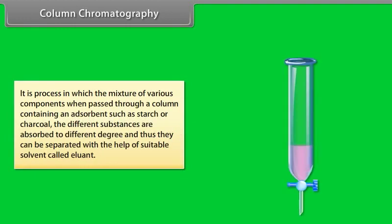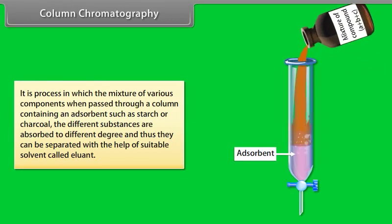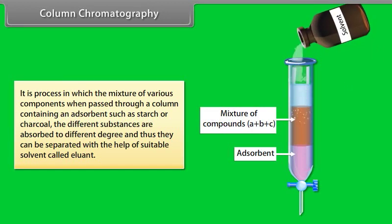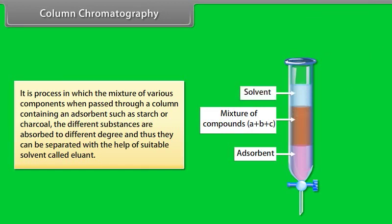Column chromatography: It is the process in which a mixture of various components, when passed through a column containing an adsorbent such as starch or charcoal, causes the different substances to be adsorbed to different degrees, and thus they can be separated with the help of a suitable solvent called the eluent.